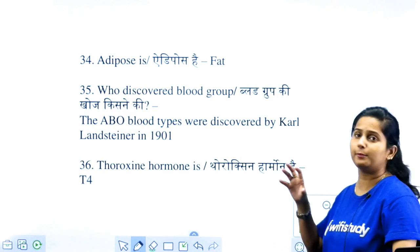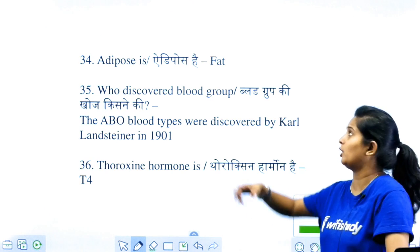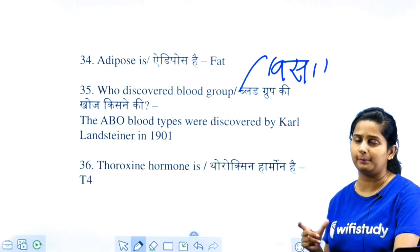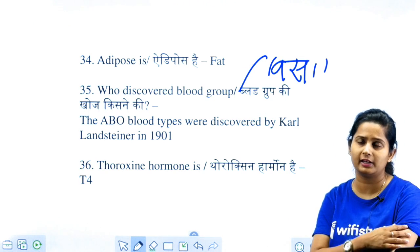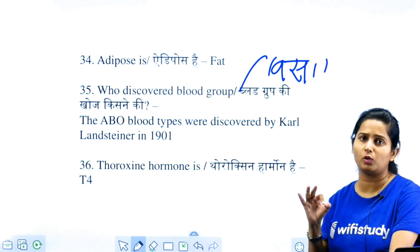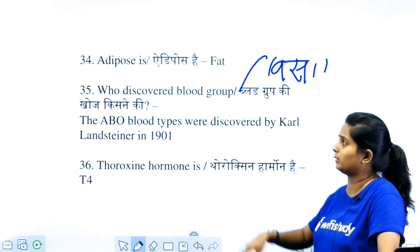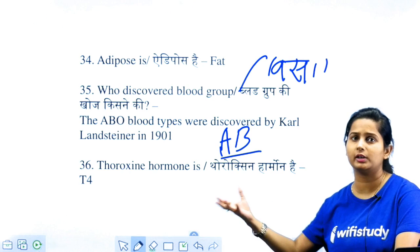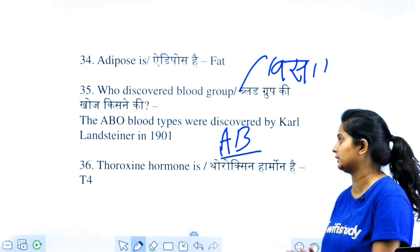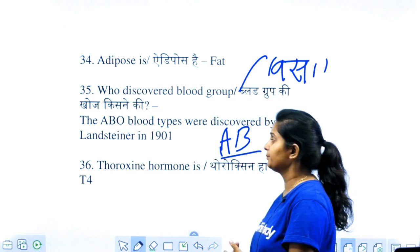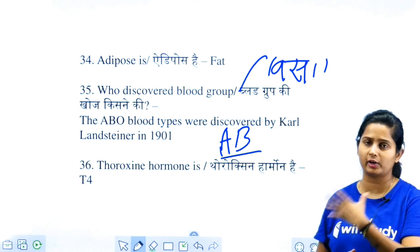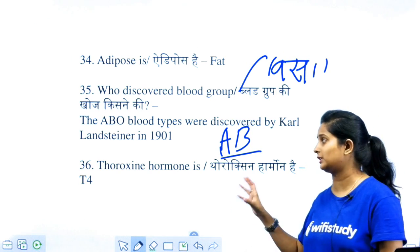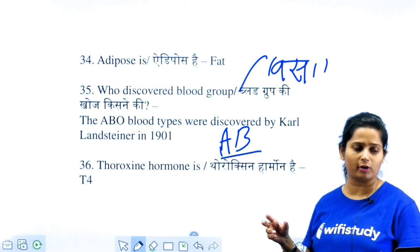What are the adipose tissues? Adipose tissues are fat. The fat in your body is used to store energy. Who discovered blood groups? Carl Landsteiner discovered the ABO blood type system. The AB blood group was discovered by Decastello and Sturli, who were students of Carl Landsteiner. The thyroid gland releases hormones in two or three forms: T3, T4, and thyroxine. T4 is the main thyroid hormone.